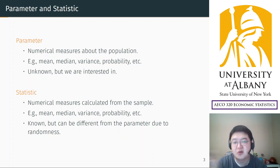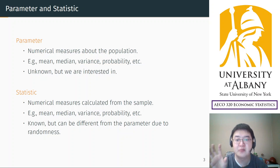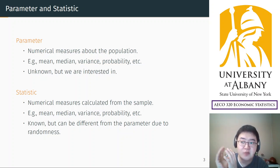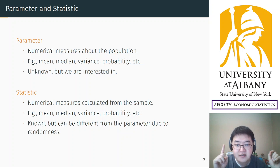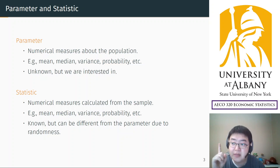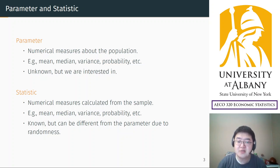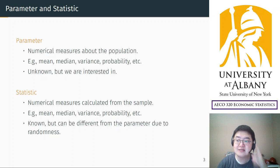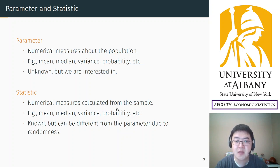In general, the story goes like this: you are interested in a parameter — for example, the mean, some probability, variance, or median about the population. The true mean, the parameter, is what you want. To estimate that, you use a statistic. If I'm curious about the percentage of voters voting for a certain candidate, I do a survey and calculate the percentage of voters supporting the candidate from the sample. That is my estimator — that is a statistic, a numerical measure calculated from the sample.